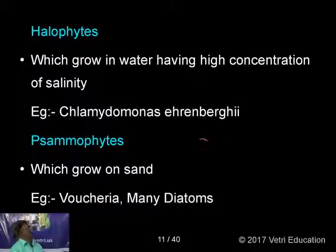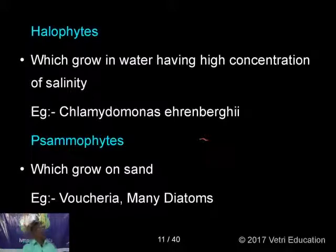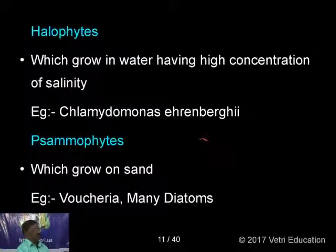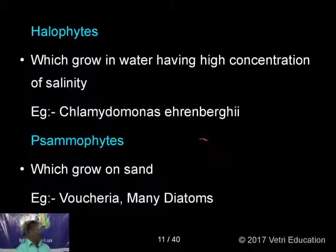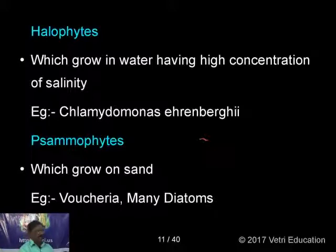Halophytes are plants that grow in water with a high concentration of salinity. Example: Chlamydomonas Ehrenbergii. Psammophytes grow on sand — 'psammos' means sand. Examples include Vaucheria and many diatoms found in sand.